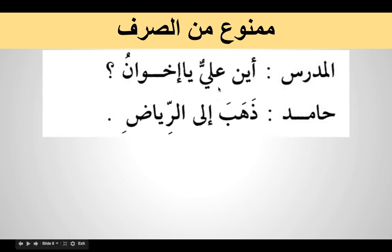Al-mudarris asks: Ayna Ali ya ikhwan? — Where is Ali, O brothers? Ali is a proper Arabic name and it takes double dammah. Ya ikhwanu — ikhwanu is the plural of akhun. Ikhwanu has single dammah — we need to understand why. Hamid replies: Dhahaba — He went. Dhahaba is the fi'l and the fa'il is mustatir with taqdeer huwa, and huwa refers to Ali since the question was about him. Dhahaba ila Riyadhi — He went to Riyadh.